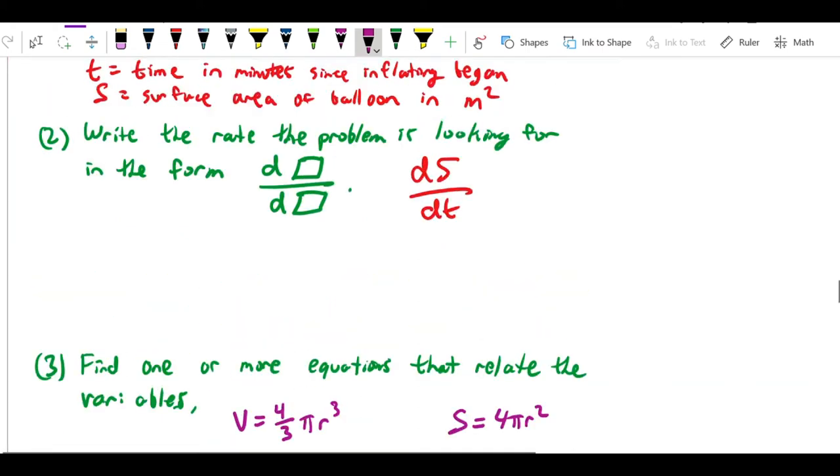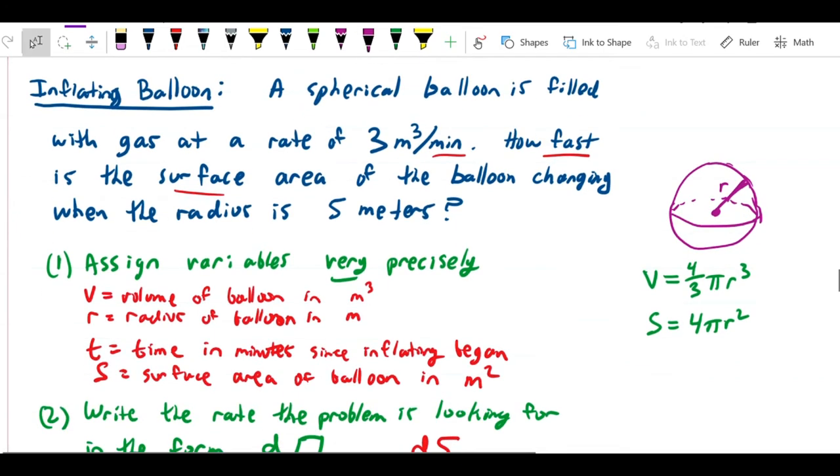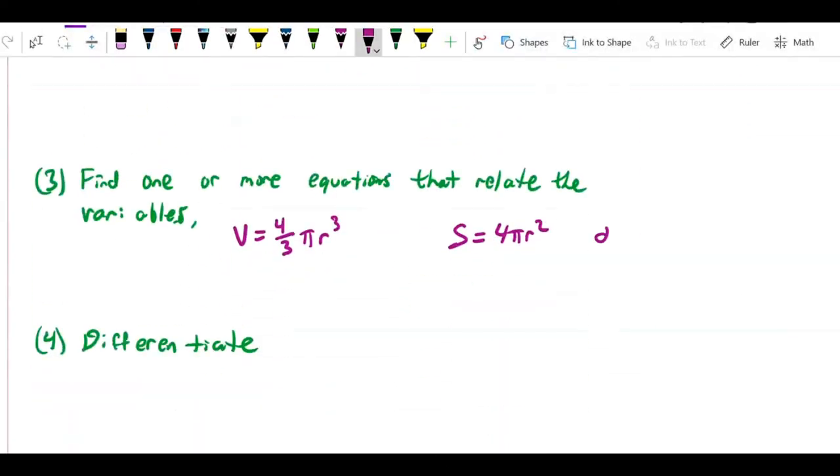We can also extract from the problem, the balloon is being filled with gas at a rate of 3 cubic meters per minute. When you fill something with gas, such as air or helium, what you're doing is you're increasing the volume of the balloon. So this is actually the rate at which the volume of the balloon is changing. We know that the way we translate a rate of change into calculus is we write d something over d something else. That means the volume V is changing with respect to time. This statement means that dV/dt is equal to 3.